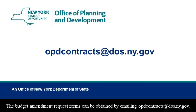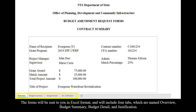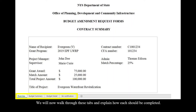The budget amendment request forms can be obtained by emailing opdcontracts at dos.ny.gov. The forms will be sent to you in Excel format and will include four tabs which are named: Overview, Budget Summary, Budget Detail, and Justification. We will now walk through these tabs and explain how each should be completed.